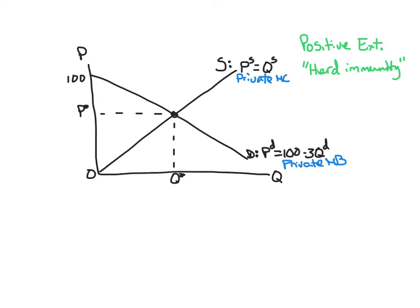So actually, let's start by calculating the equilibrium Q star, P star. We said supply equal to demand. Supply is just Q and demand is 100 minus 3Q. So the quantity here is 25.